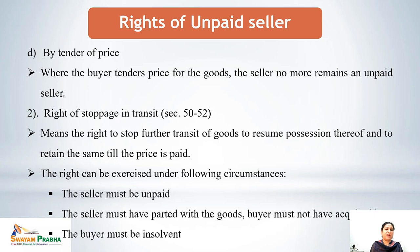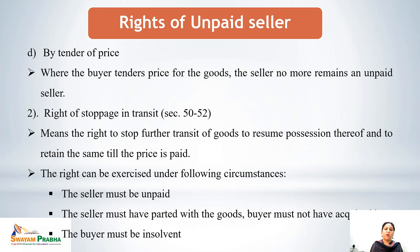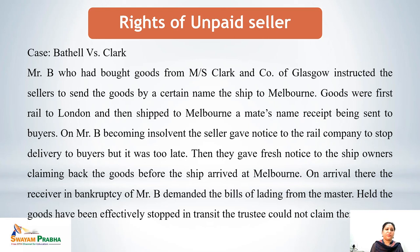The second right of an unpaid seller is the right of stoppage in transit, covered under sections 50 to 52. The right of stoppage in transit means stopping the goods while in transit — once goods have been shipped by the seller to the buyer, the unpaid seller wants to stop those goods. This right can be exercised only under the following circumstances: the seller must be an unpaid seller; the seller must have parted with the goods but the buyer must not yet have acquired them — goods are still in transit; and the buyer must be insolvent.